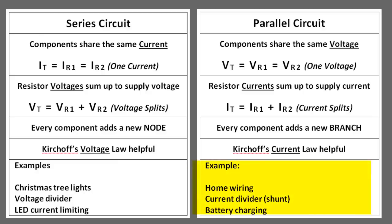For parallel circuits, examples include home wiring — all the devices in your home are wired in parallel. That means all the appliances you plug in get the same voltage, 120 volts, and no matter which appliances you have plugged in, everything continues to work. Another use is current dividers or shunts, which help measure currents through circuits.